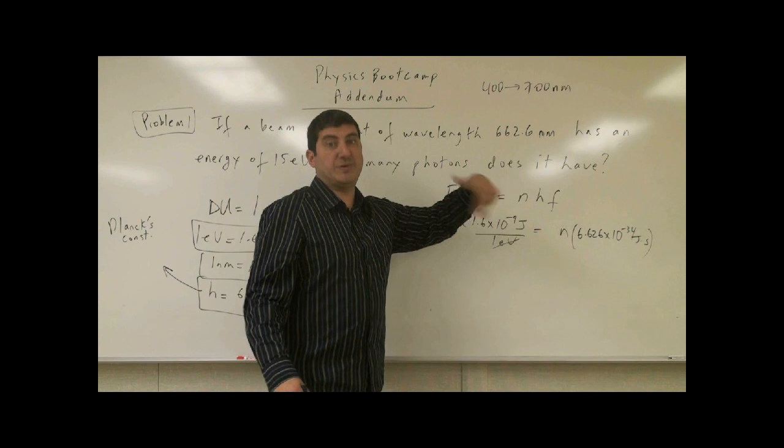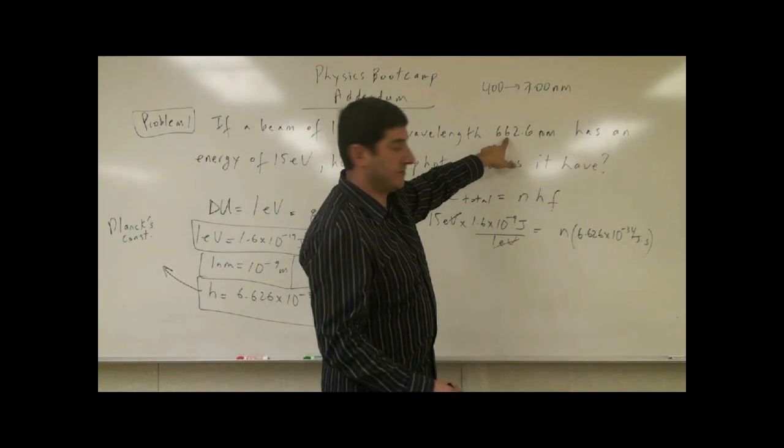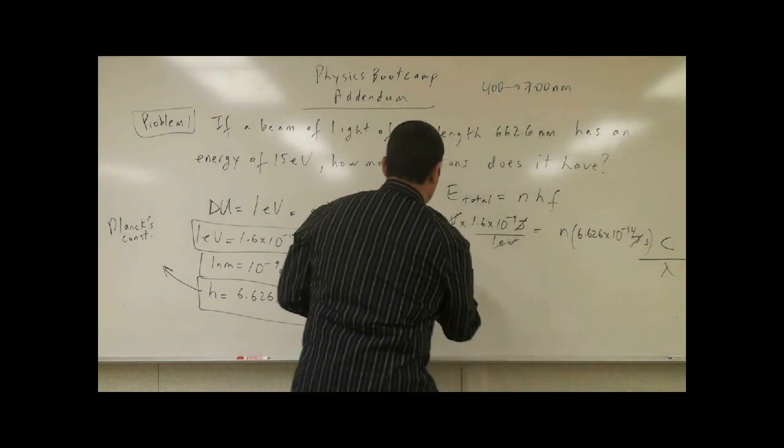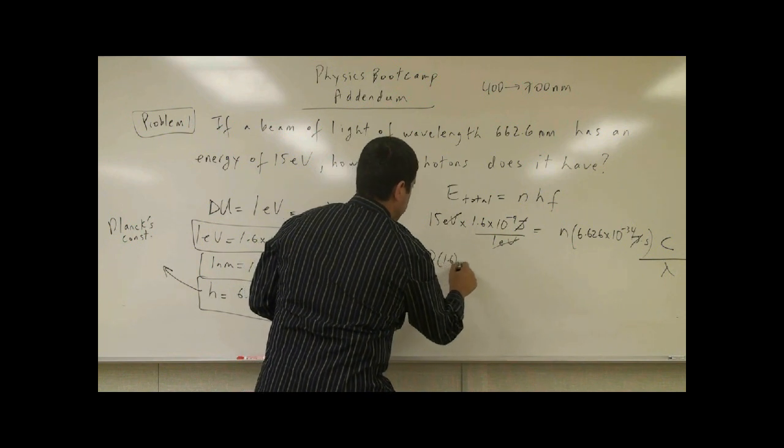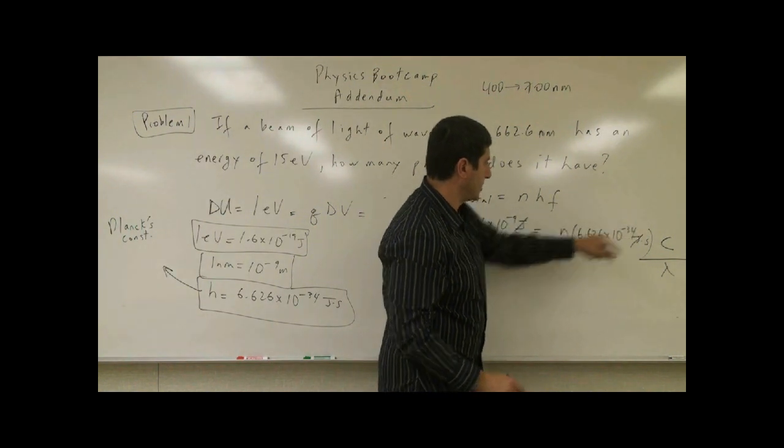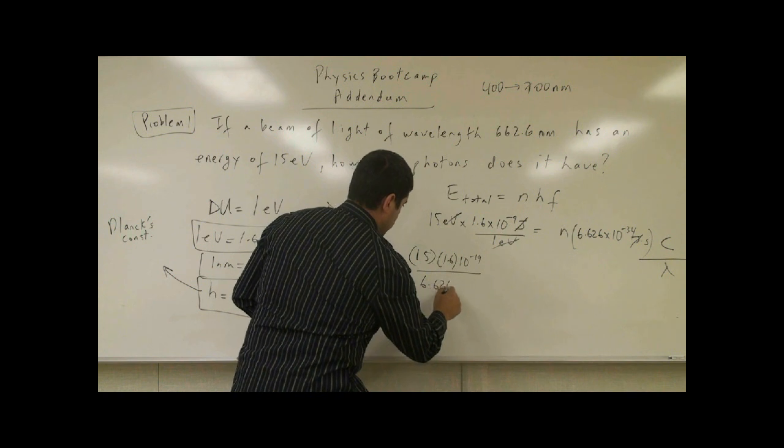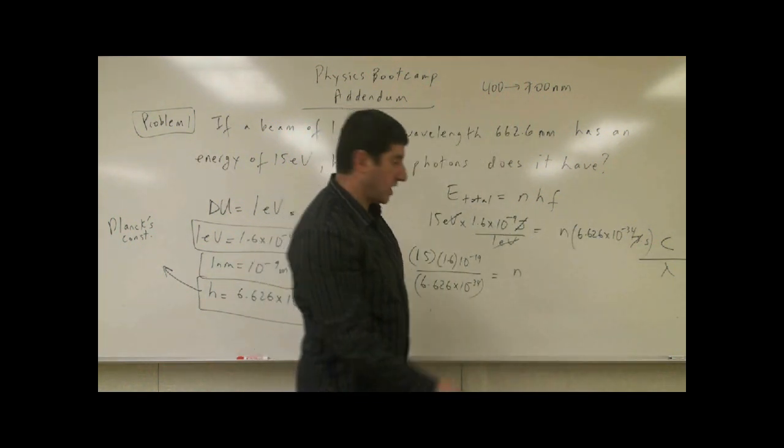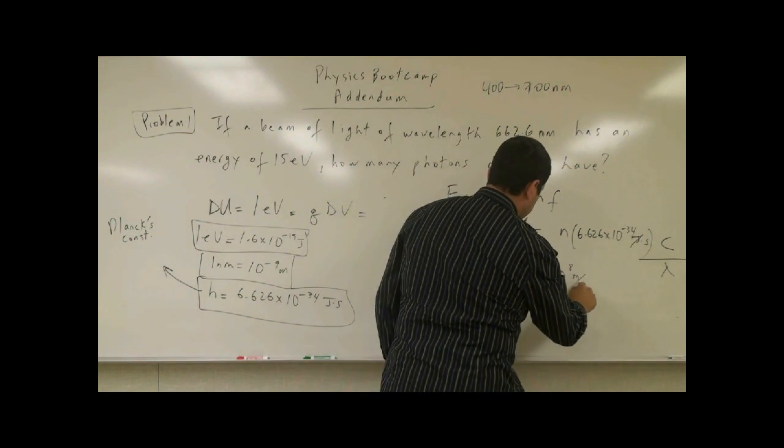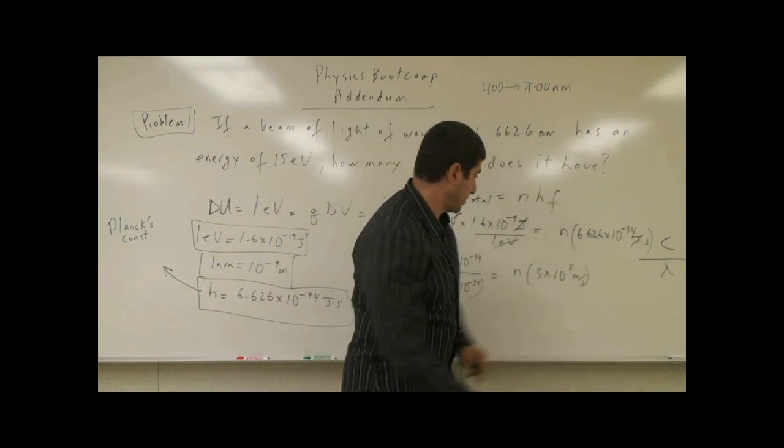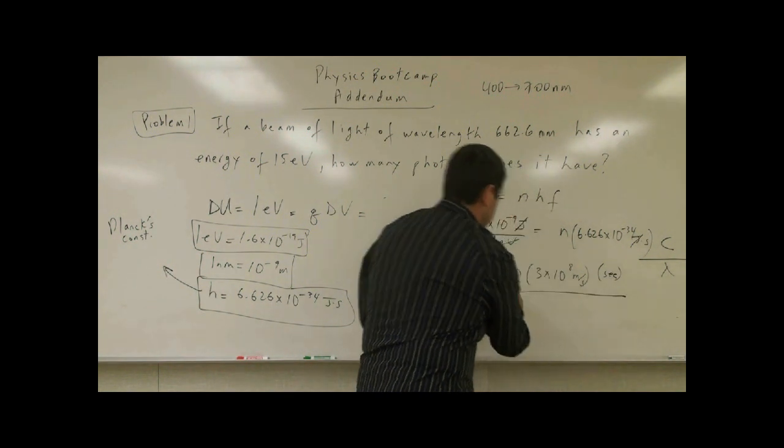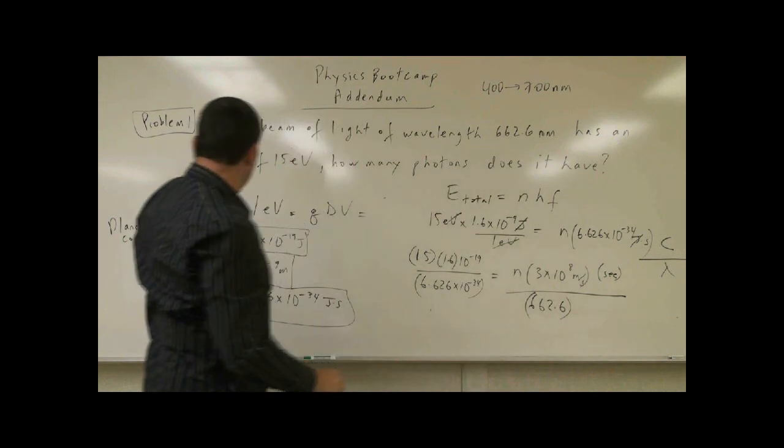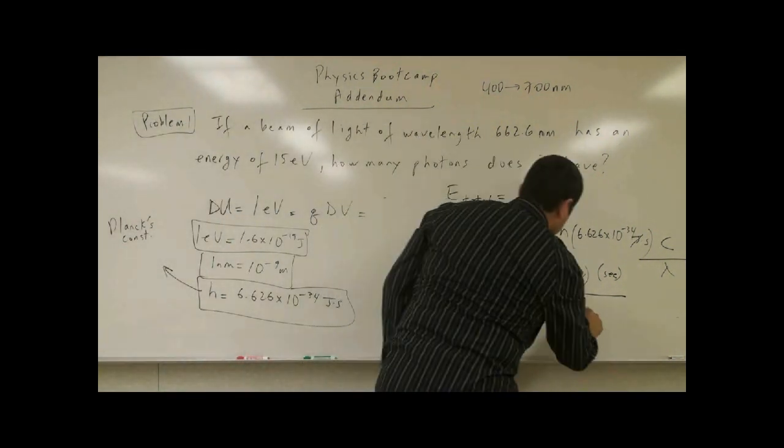Now what's the frequency of the light beam? The frequency of the light beam is the speed of light divided by its wavelength. The wavelength of the light beam is given, so we need to do speed of light divided by its wavelength. So far, what do we have? The joule and the joule is going to cancel, and we have 15, 1.6, 10 to the minus 19. The 6.626, 10 to the minus 34, is going to come down to the bottom. Then we have N. Now we need to put the speed of light, which is 3 times 10 to the 8 meters per second. Remember, we had an extra second here, as far as the unit is concerned. And then the wavelength is going to be 662.6 nanometer, and each nanometer is 10 to the minus 9 meter, times 10 to the minus 9 meter.